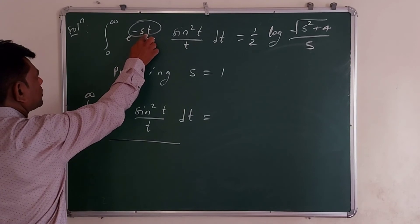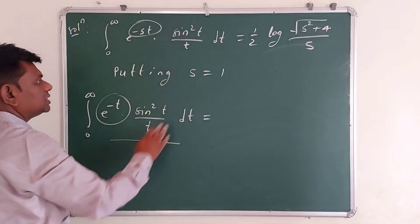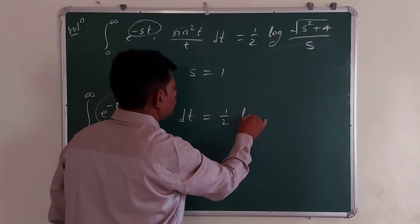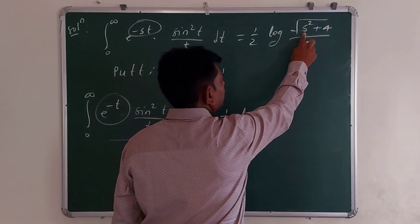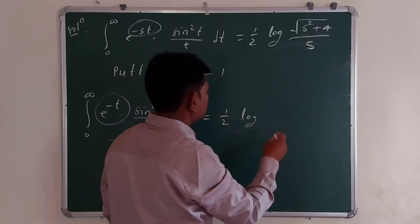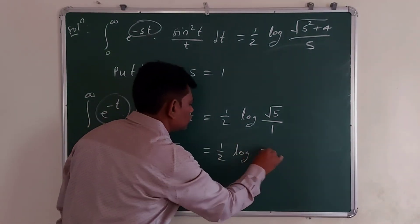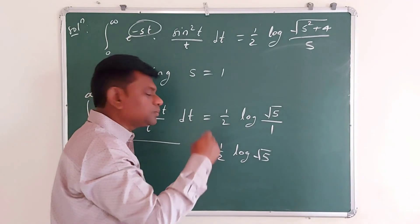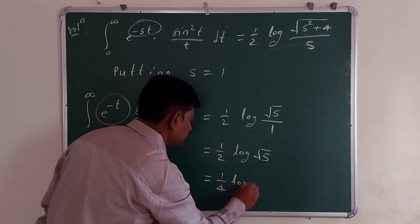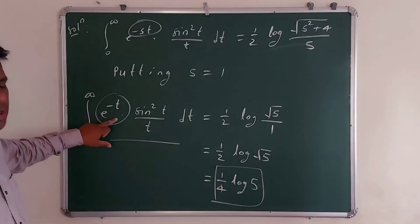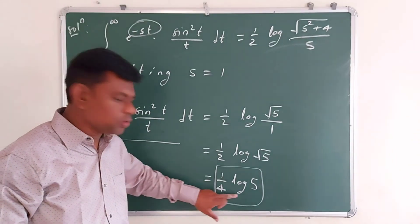Now when s equals 1, e to the power minus st becomes e to the power minus t. The integral from 0 to infinity of e to the power minus t times sin squared t over t dt equals one half times log of root of s squared plus 4 over s, with s equal to 1. So root of 1 plus 4 is root 5, and this equals one half times log root 5, which equals one half times one half log 5, giving 1 over 4 times log 5.